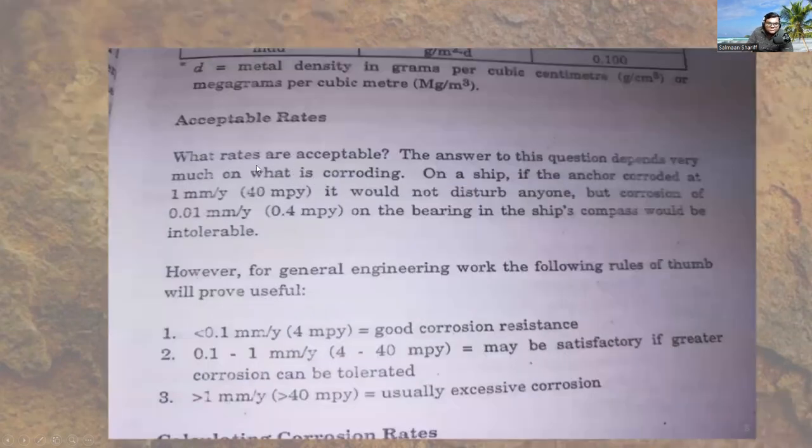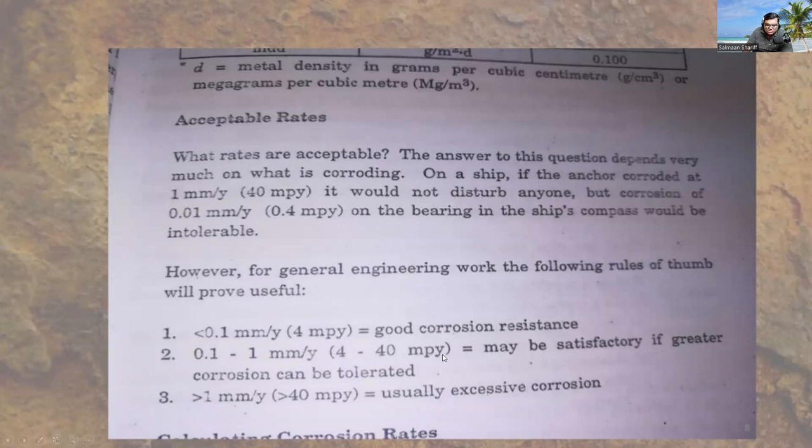What rates of corrosion are acceptable? As per engineering standards, less than 0.1 millimeter per year equals good corrosion resistance. 0.1 to 1 millimeter per year, that is 4 to 40 mils per year, may be satisfactory. Greater than 1 millimeter per year is usually excessive corrosion.